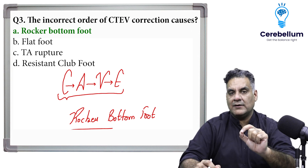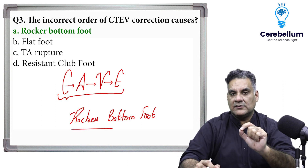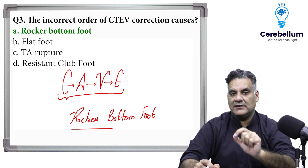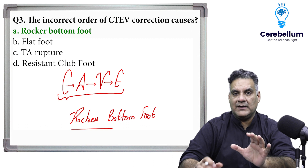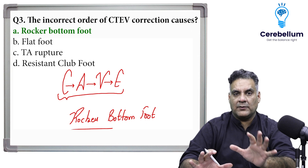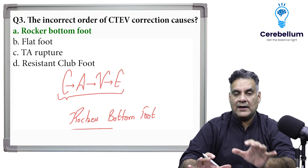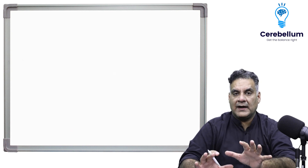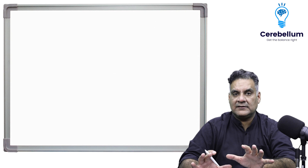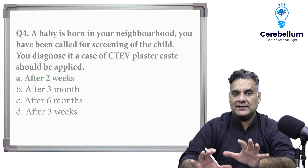When do you actually start treating CTEV? It is ASAP — as soon as possible. You apply a cast using the Ponseti technique.